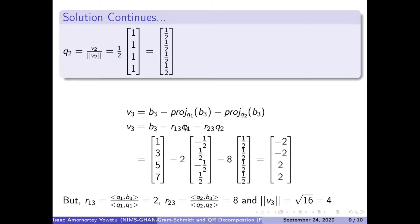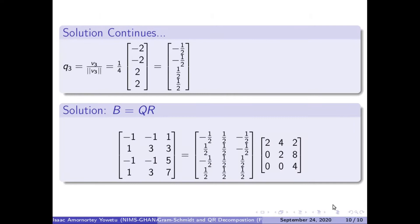We then substitute back, knowing our Q1, Q2, and B3. Substituting, we eventually get our V3 vector. We go ahead to find the norm of V3, which gives us 4. Since the norm of V3 is 4, one-quarter times our V3 vector gives us our Q3 vector.